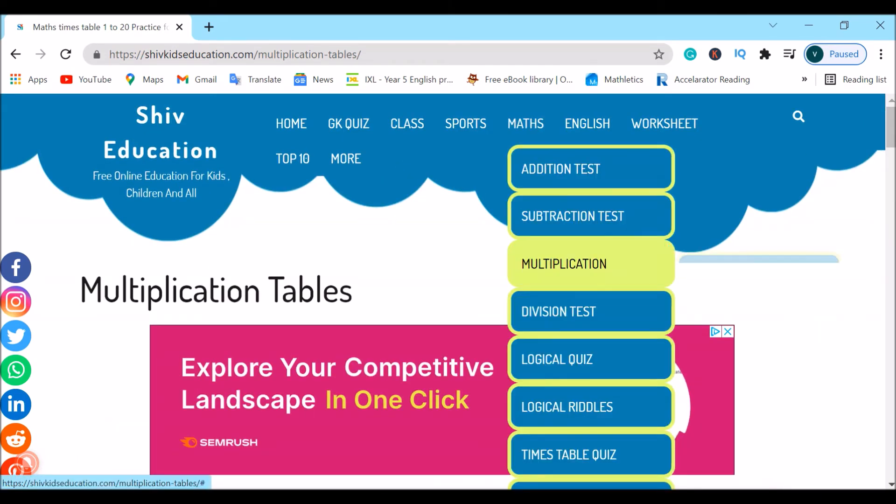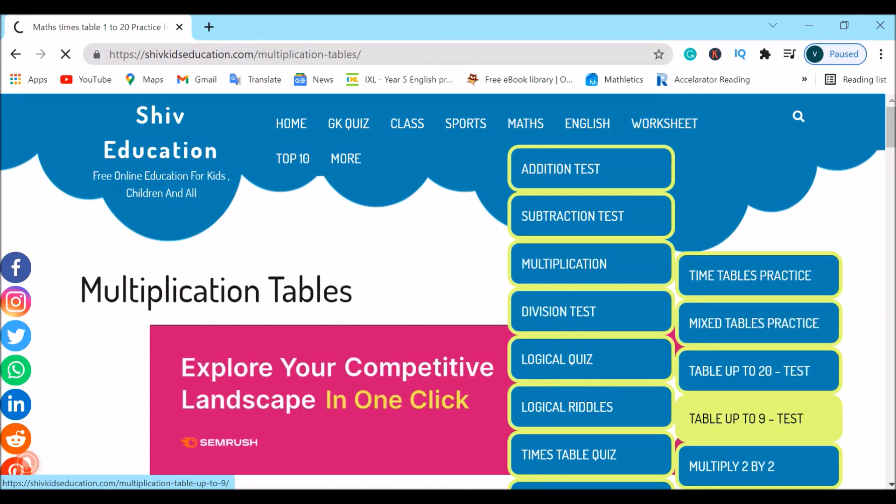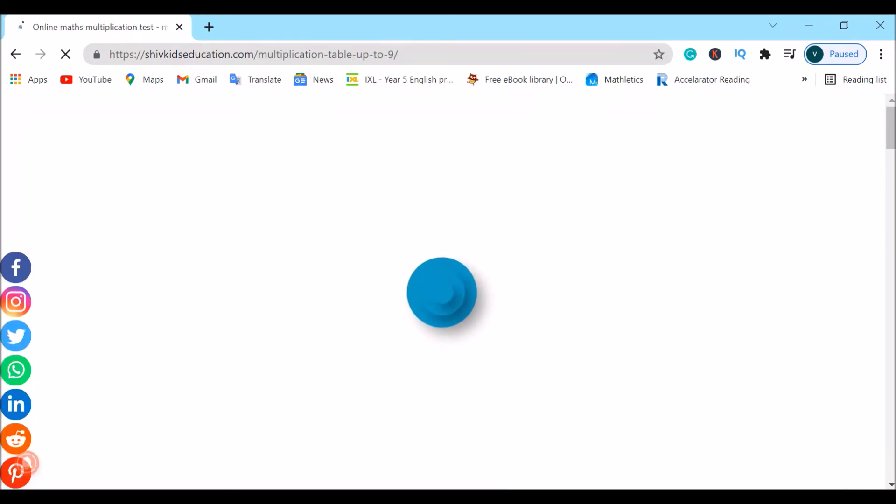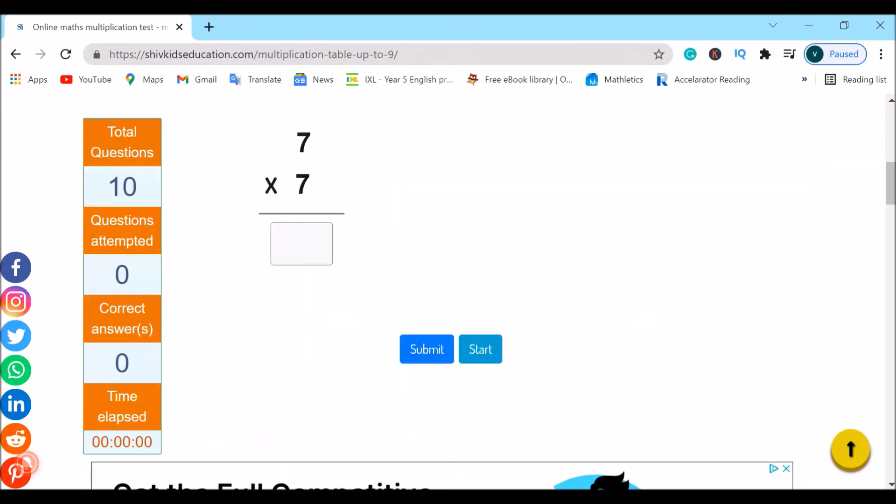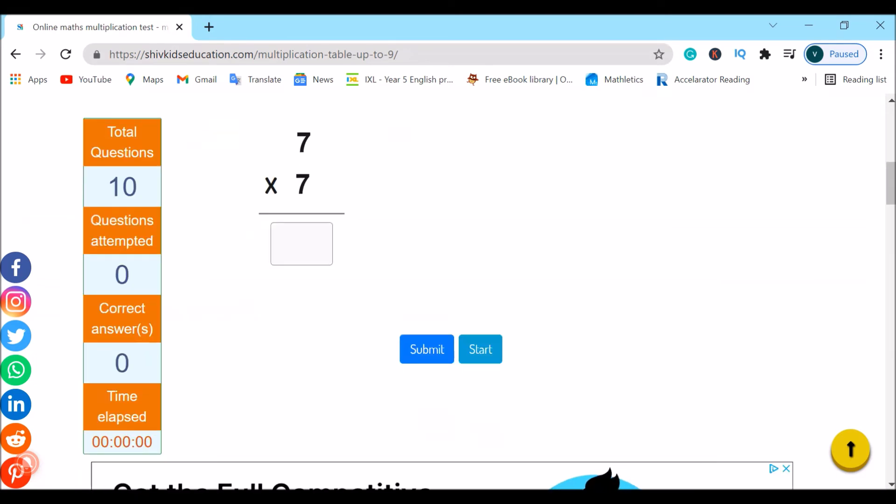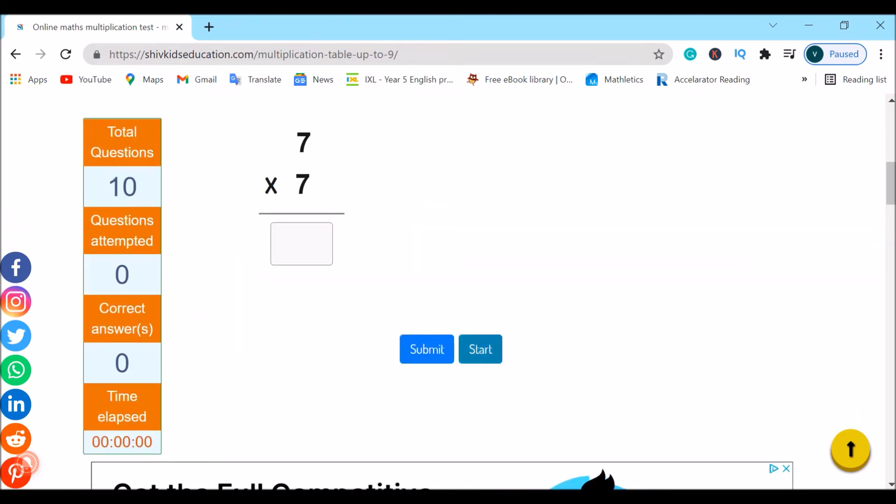Now that we've done this, let's go all the way up and let's go to maths. Let's go down to multiplication and let's go to Times Table up to 9 test. Now that we have finished our practice questions, we are going to do our Times Tables up to 9 test. In this test, you will have 10 questions. As it says, total questions are 10. The questions attempted will be listed below. The correct answers will be again listed below. The wrong answers will not be in this section. And the time elapsed is basically how much time you have taken in doing the questions. If you want to start this, just click on the Start button. Let's click on the Start button and go.